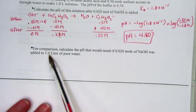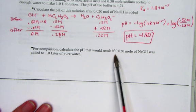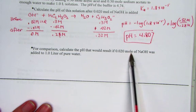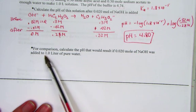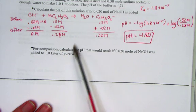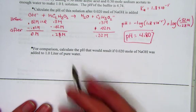For comparison, let's calculate the pH that would result if 0.020 molar sodium hydroxide was added to pure water - not to the buffered solution, but to pure water.